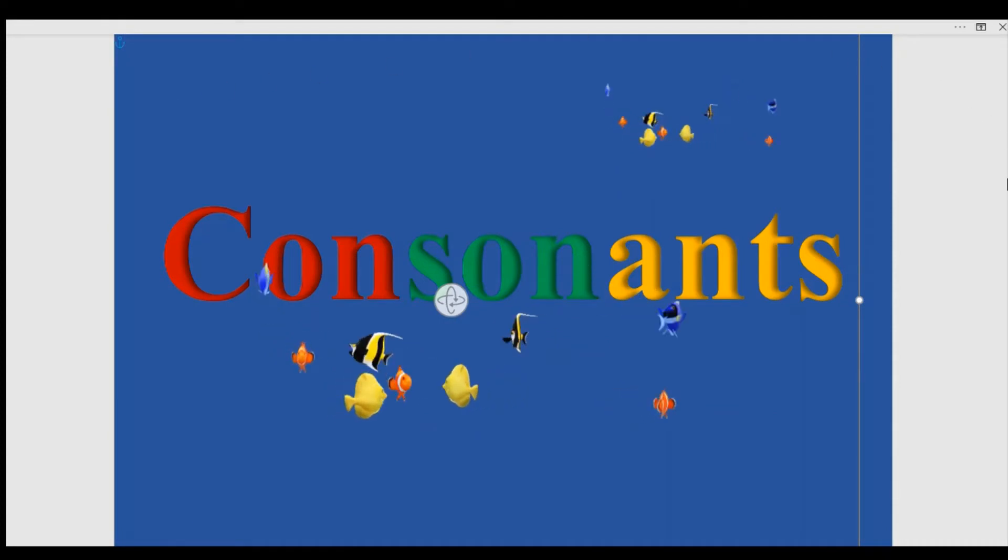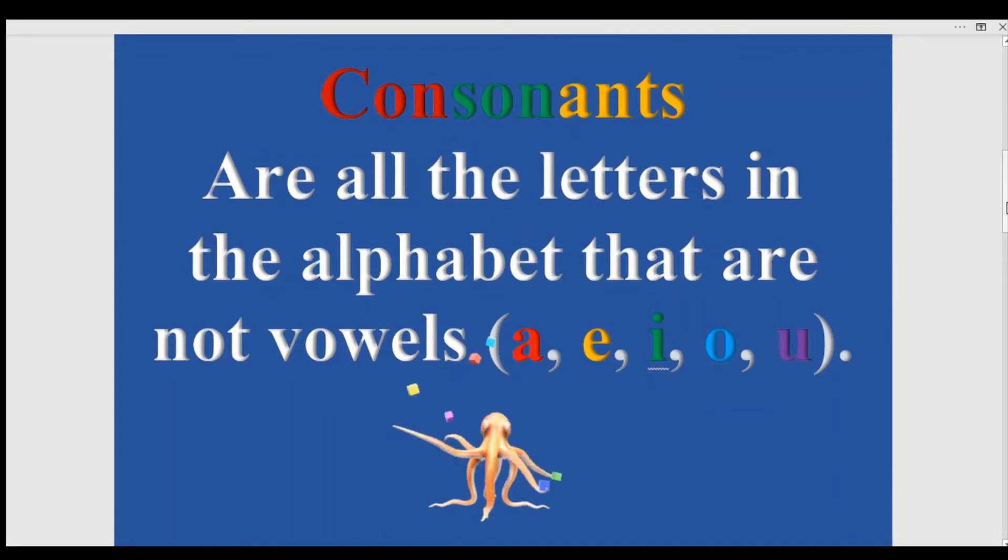Consonants. Consonants are all the letters in the alphabet that are not vowels. Vowels are A, E, I, O, U.